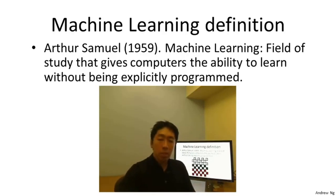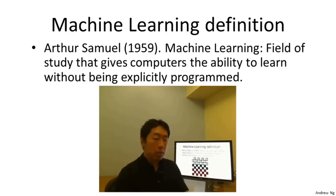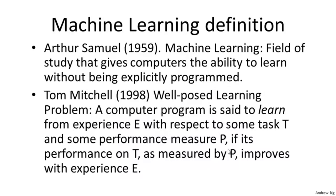This is somewhat of an informal and older definition. Here's a slightly more recent definition by Tom Mitchell, a friend at Carnegie Mellon. Tom defines machine learning by saying that a well-posed learning problem is defined as follows: a computer program is said to learn from experience E with respect to some task T and some performance measure P, if its performance on T as measured by P improves with experience E.